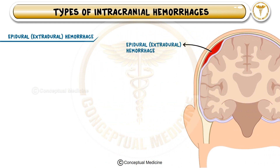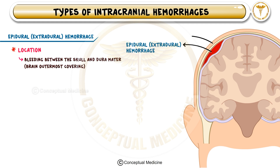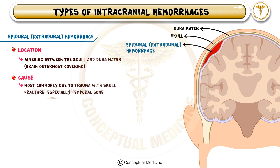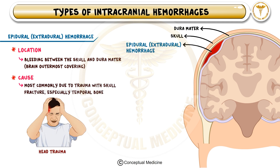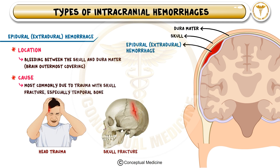Epidural, or extradural, hemorrhage is bleeding between the skull and dura mater, the outermost covering of the brain. This type of hemorrhage is most commonly seen after head trauma that results in a skull fracture, particularly a temporal bone fracture. The fracture often injures the middle meningeal artery, causing rapid arterial bleeding, making this a neurosurgical emergency.